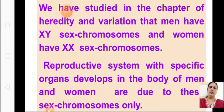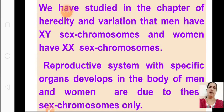Before that let us learn about the chromosomes. We have studied in the chapter of Heredity and Variation that men have XY sex chromosomes and women have XX. Reproductive system with specific organs developed in the body of men and women are due to these sex chromosomes, because the organs differ in both male and female because of sex chromosomes only.